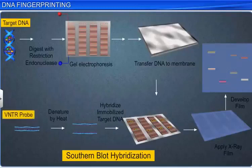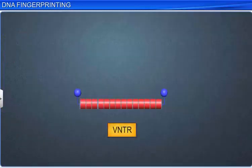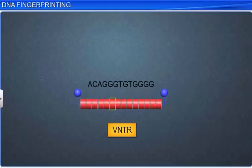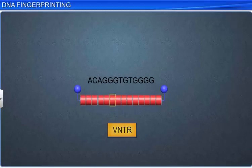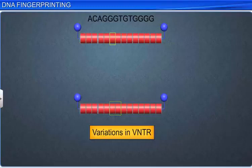VNTR is a small sequence of DNA arranged tandemly in several copy numbers, which varies from one chromosome to another in an individual. A very high degree of polymorphism is seen in the number of these repeats, due to which the size of the VNTR varies from 0.1 to 20 kilobytes.